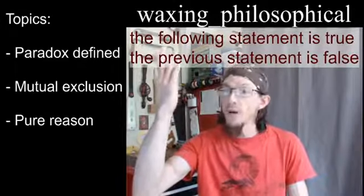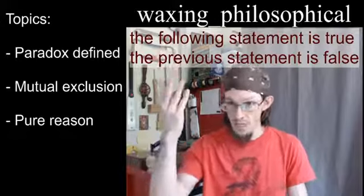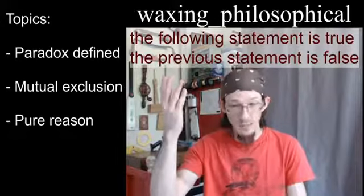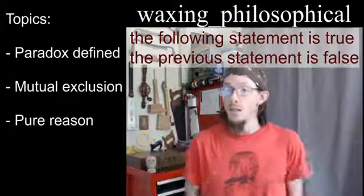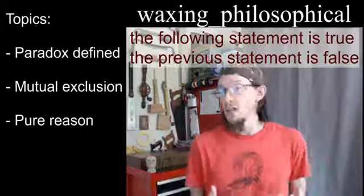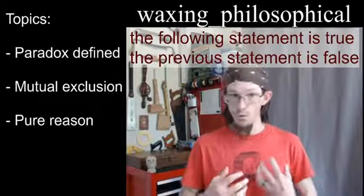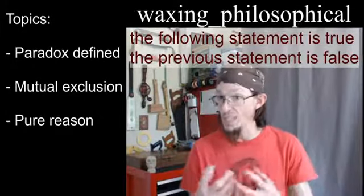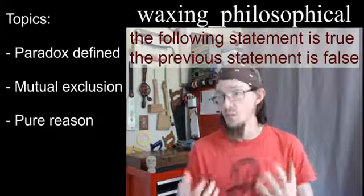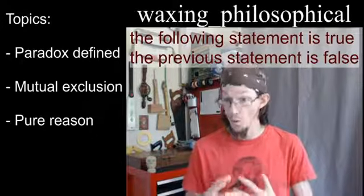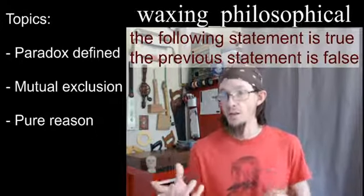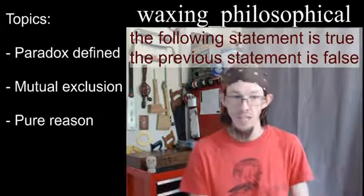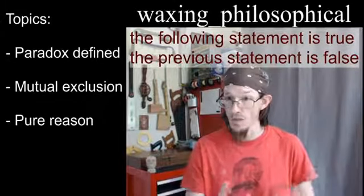The first statement says 'the following statement is true,' and the next says 'the previous statement is false.' Clearly both cannot be true — for one to be true, it negates the possibility that the other could be true. When one is confirmed true, it automatically negates the possibility that the other could be true.